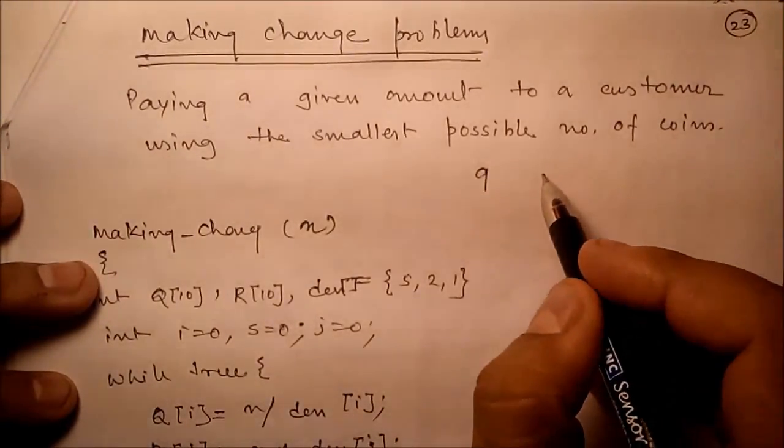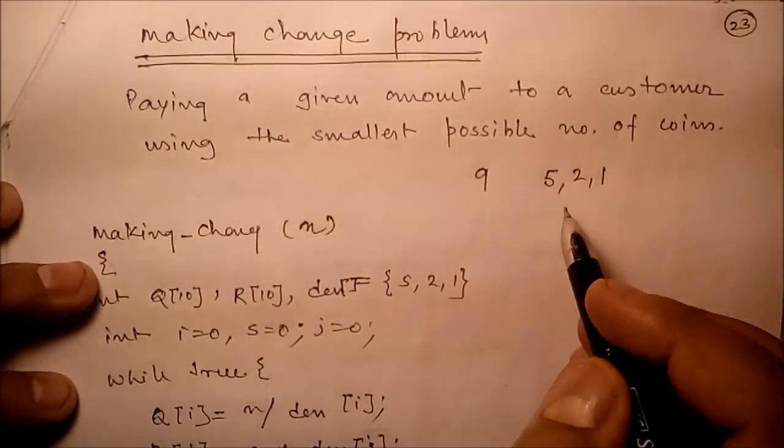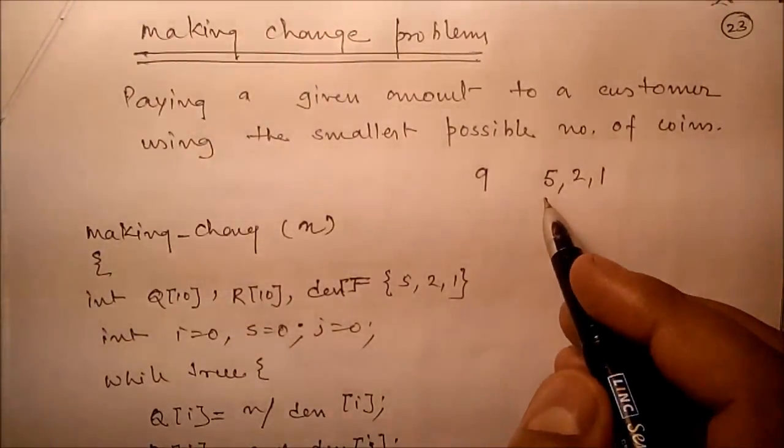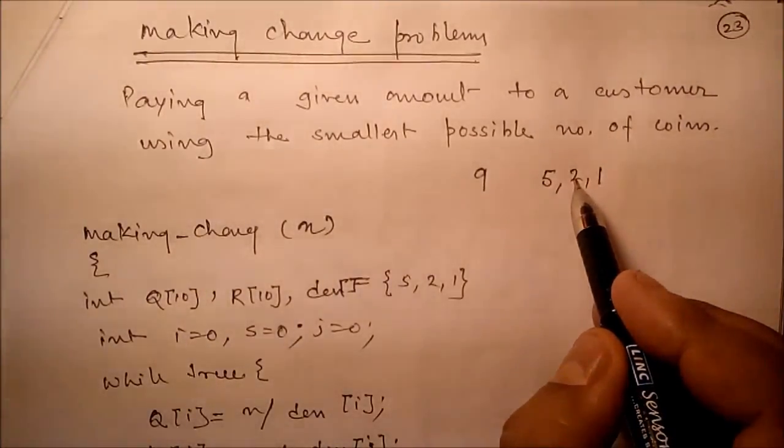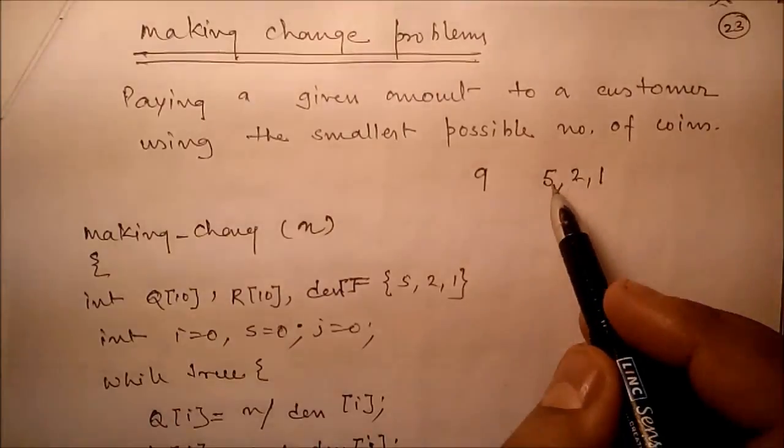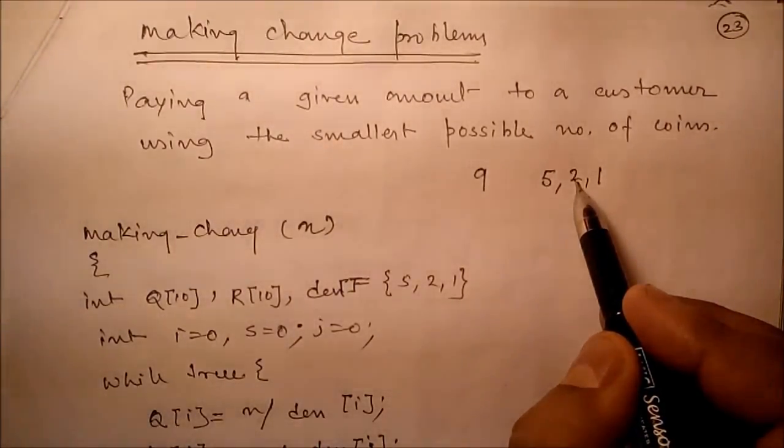Suppose you have to return 9 rupees and the denominations you have are 5, 2, 1. So what we can do: we can return 9 one rupees, we may return 4 two rupees and 1 one rupee, or you may return 1 five rupees and 2 two rupees.